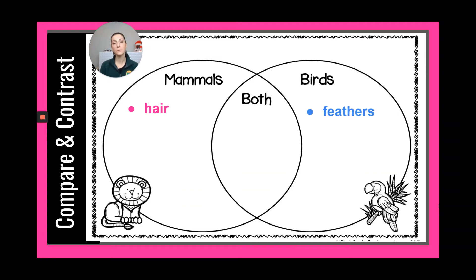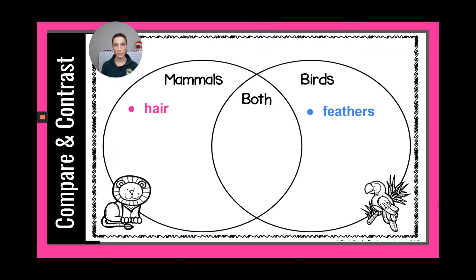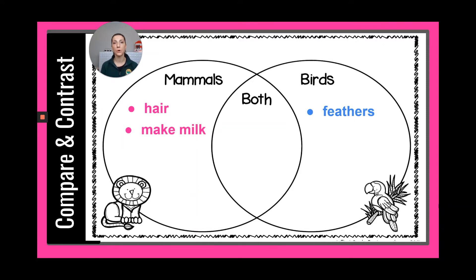Next, let's think about something unique to each group having to do with their babies. What do mammals do for their babies that birds do not? They make milk. All mammals make their own milk for their babies. If you need to pause, please pause to write 'make milk.'